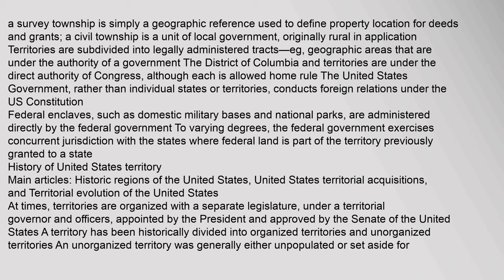The United States government, rather than individual states or territories, conducts foreign relations under the U.S. Constitution. Federal enclaves, such as domestic military bases and national parks, are administered directly by the federal government to varying degrees. The federal government exercises concurrent jurisdiction with the states where federal land is part of the territory previously granted to a state.